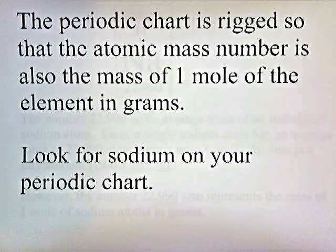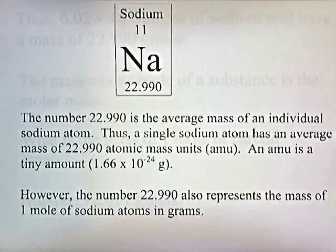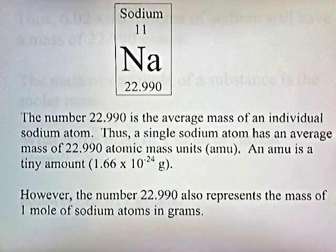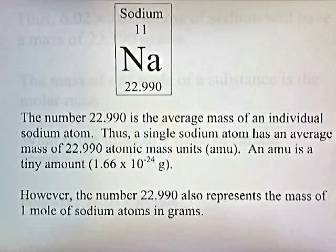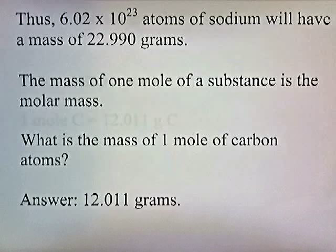Look for sodium on your periodic chart. The number 22.990 is the average mass of an individual sodium atom. Thus a single sodium atom has an average mass of 22.990 atomic mass units. An AMU is a tiny amount — 1.66 times 10 to the negative 24. However, the number 22.99 also represents the mass of one mole of sodium atoms in grams. Thus, 6.02 times 10 to the 23rd atoms of sodium will have a mass of 22.990 grams.